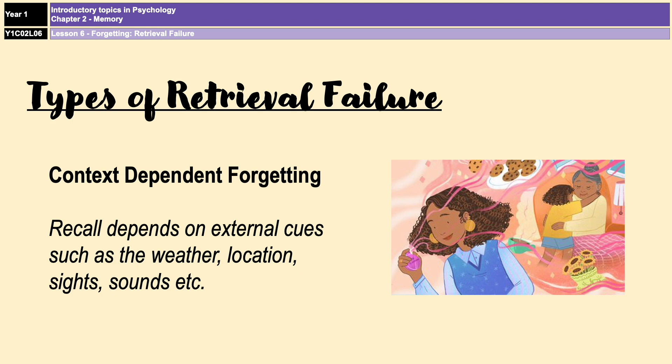Context-dependent forgetting is when your recall is dependent on external cues, such as specific locations, certain smells, or specific objects. It's a bit like when you go somewhere and think you've never been there before, but then you see something — like a landmark or a specific tree or building — and all of a sudden you remember that you have been there before. You couldn't remember anything about that place before seeing the external cue that triggered the memory.